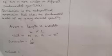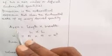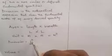Dimension shows you the fundamental makeup of every derived quantity — the skeleton, the building blocks of every derived quantity. So when dimension looks at area, it tells you that it's just length times length; it's just L squared.